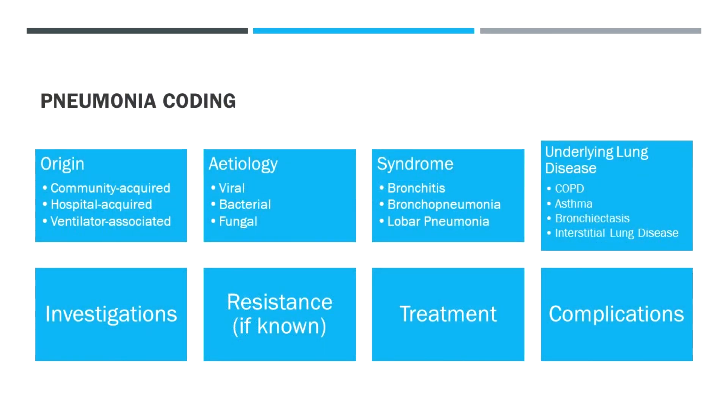The etiology — whether viral, bacterial, or fungal — is probably something we don't document enough. The syndrome: most of the time we're talking about lobar pneumonia, but you can also describe bronchopneumonia or bronchitis. Linking the pneumonia with an underlying lung disease as an exacerbation is really important and adds to complexity. Listing the investigations, the resistance if known, and the treatment also adds complexity — we don't always have cultures, but sputum cultures are the highest-yield culture in a patient with pneumonia.